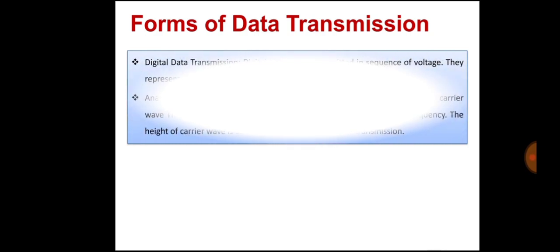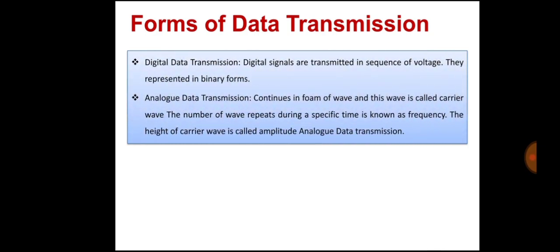Next is the forms of data communication. Generally, there are two forms of data communication: analog data transmission and digital transmission mode.